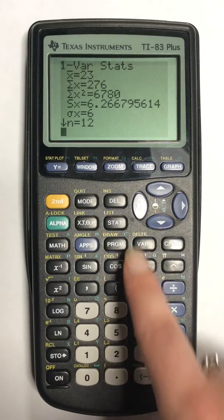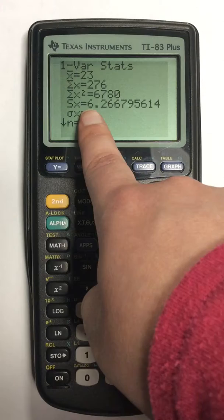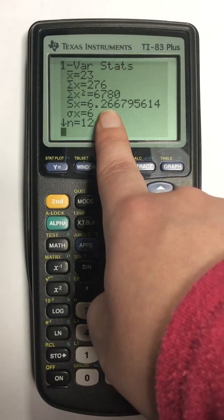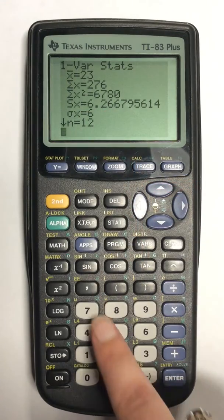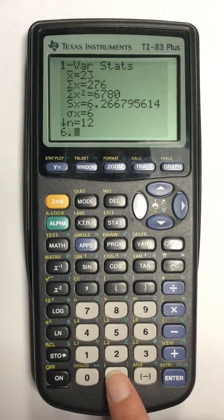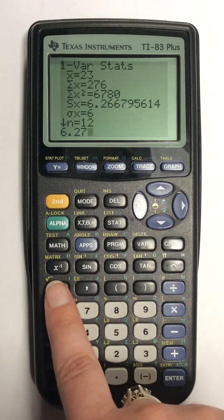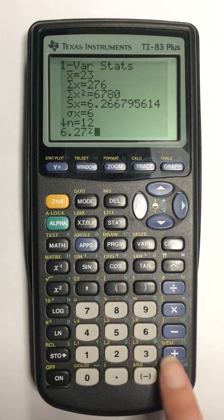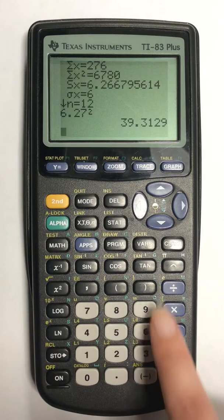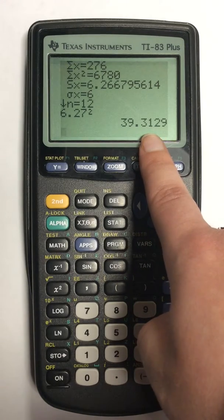If I'm looking for sample variance, I'm going to take my sample standard deviation and round it off to 6.27, square it with the square button, and hit enter. This number here is my sample variance.